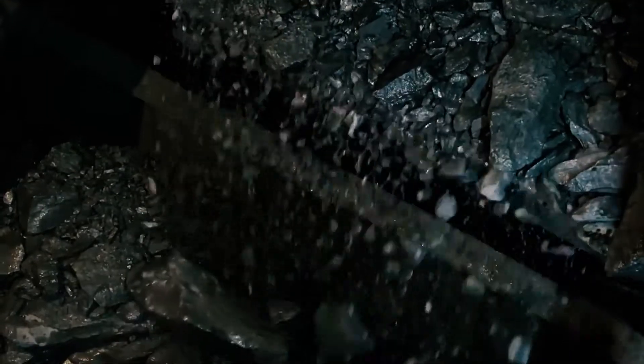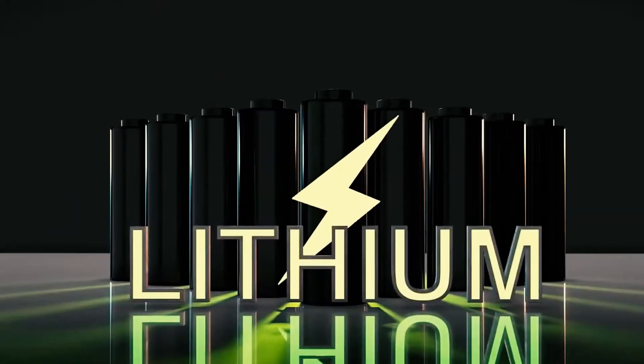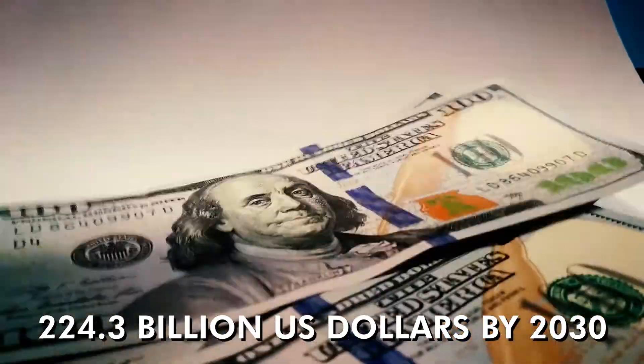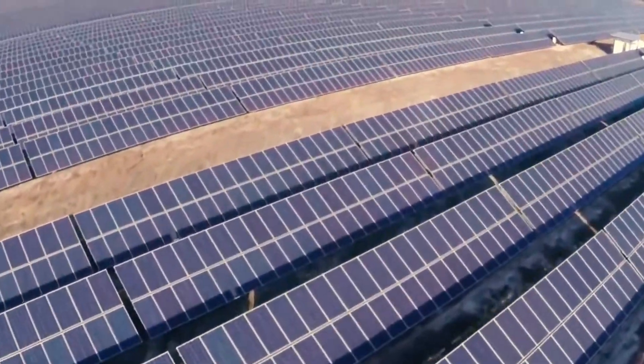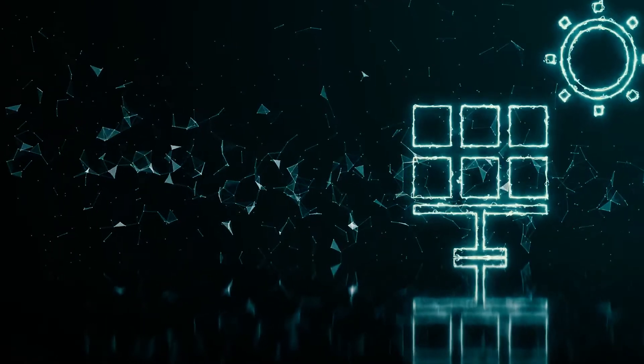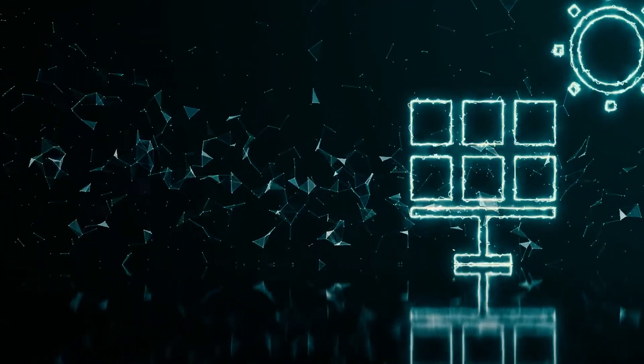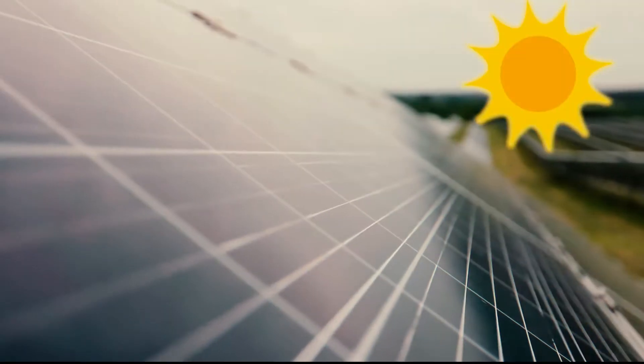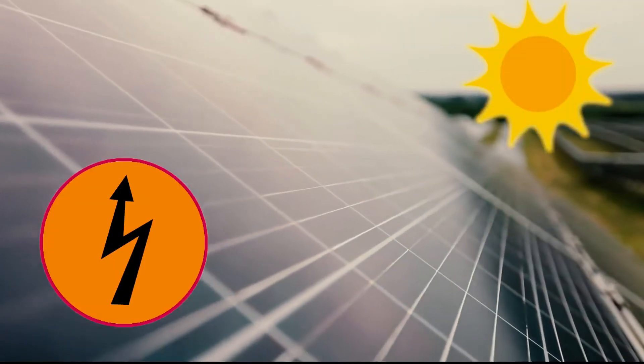According to studies, the global stationary energy market is predicted to rise by more than $224.3 billion by 2030, implying that solar, wind, and other renewable resources will play a greater role on the electricity grid. Energy storage from such resources must keep up with demand to deliver electricity during peak hours when the sun isn't shining or the wind isn't blowing.